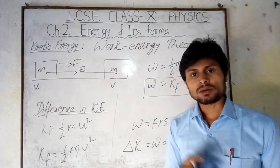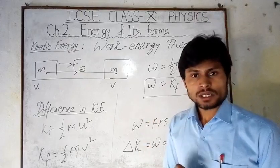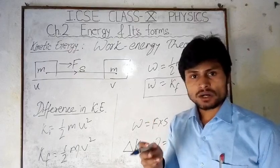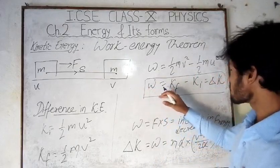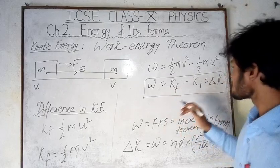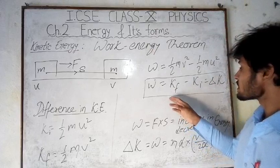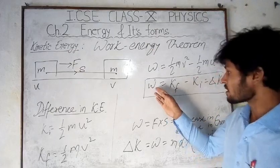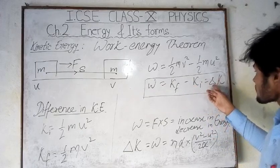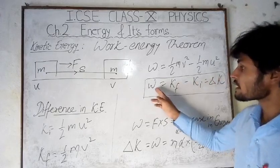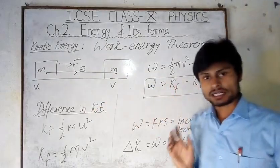So the work-energy theorem states: if any work is done on a moving body, the work done is equal to the increase or decrease in kinetic energy of the body — it equals the difference in kinetic energy. If we get negative delta K, the work done is negative and kinetic energy decreases. If we get positive delta K, the work done is positive and kinetic energy increases.